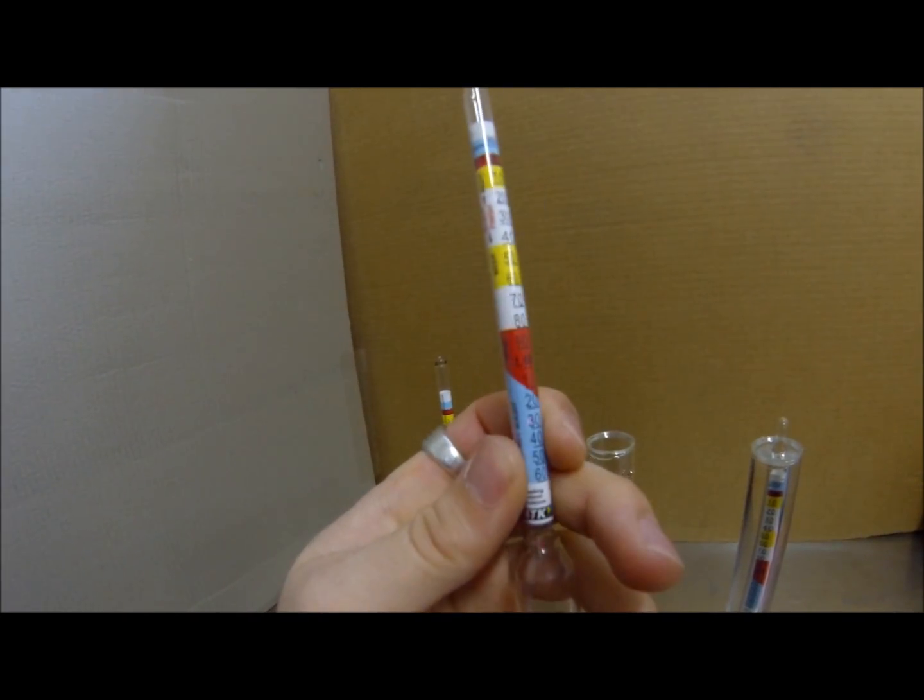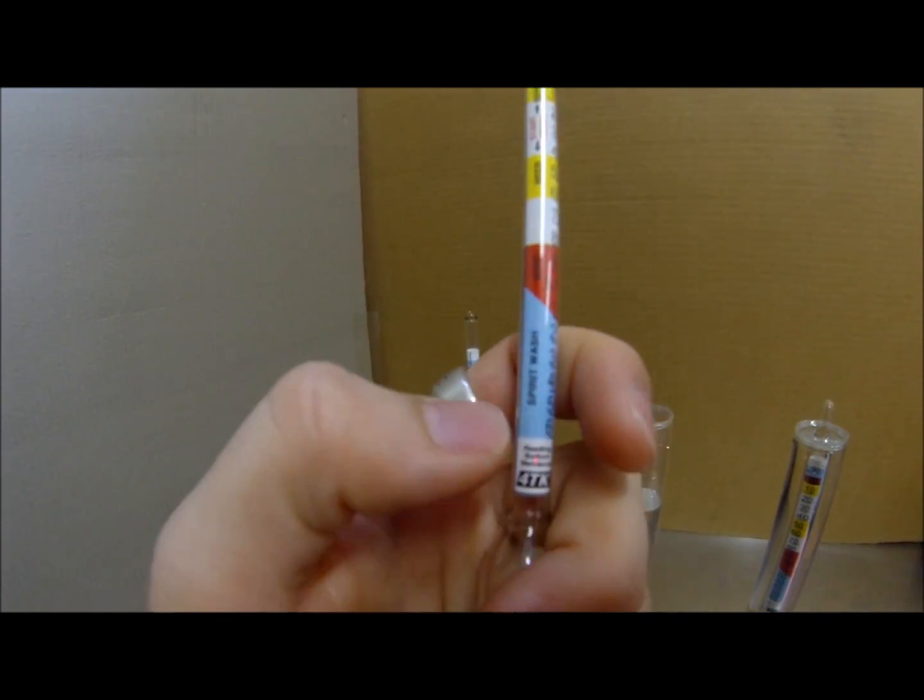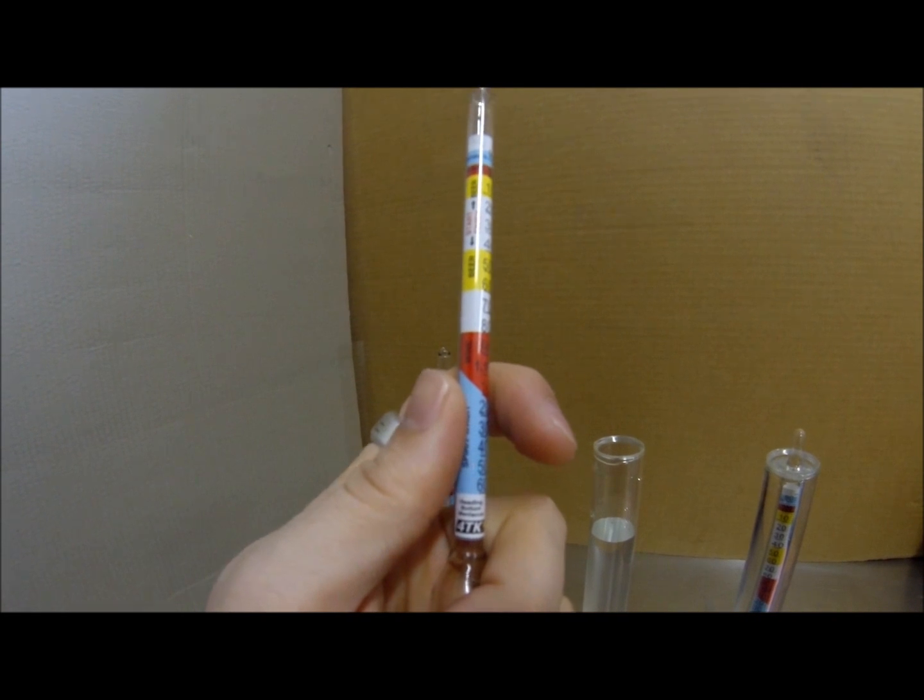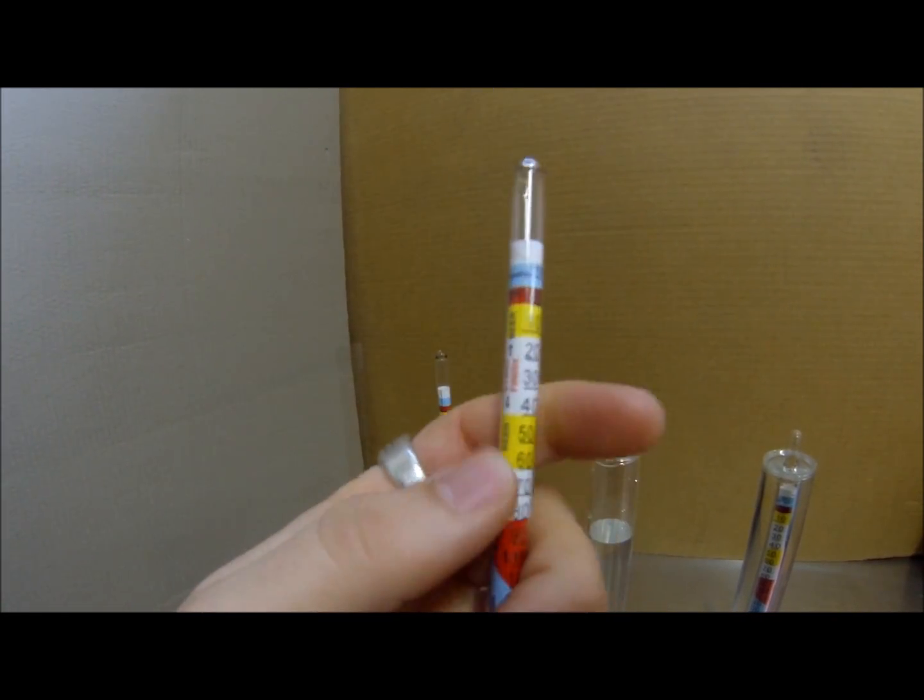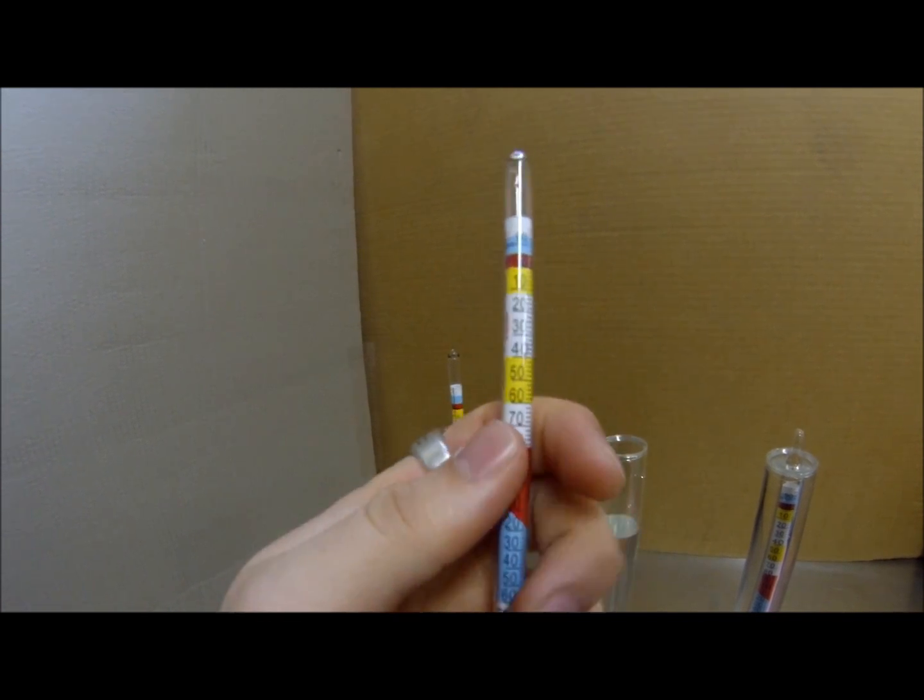This hydrometer has these little rings of different colors. Down here, spirit wash, wine wash, beer wash. That's where you'll start. As your beer or wine or spirit ferments, you'll move down towards these regions here and those are the end regions.